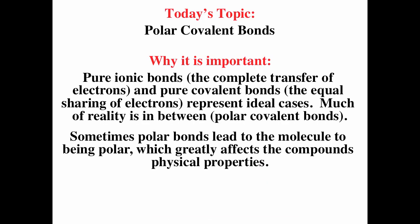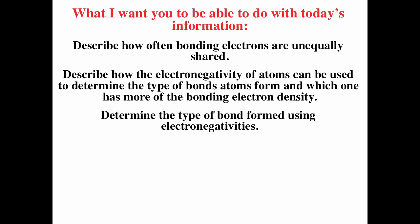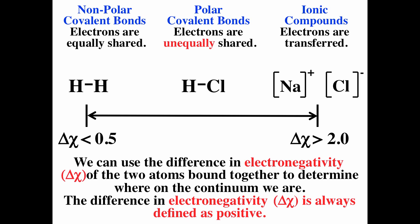In this video, we're going to talk about polar covalent bonds. Pure ionic bonds is one end of the continuum; pure covalent bonds is the other end. Much of reality is the middle, where we have polar covalent bonds. Sometimes polar bonds lead to molecules being polar, which greatly affects physical properties. After watching this video, you should be able to describe how bonding electrons are unequally shared, how electronegativity determines bond type, and which atom has more bonding electron density. If the difference in electronegativity is less than 0.5, it's nonpolar covalent; greater than 2, it's ionic; between 0.5 and 2, it's polar covalent.